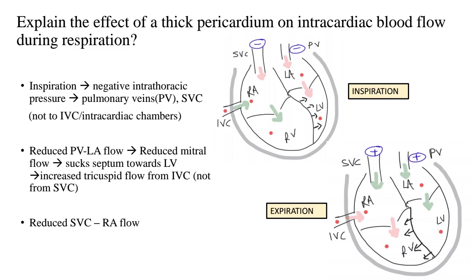Essentially, there is more negative pressure in the pulmonary veins and SVC and relatively positive pressures in the rest of the cardiac chambers and IVC. Assuming pressures in the chambers to be zero and in those two structures to be below zero — whenever there is blood flow, you expect flow from higher to lower pressure. In the case of pulmonary vein to left atrium, blood flow will not occur because there is a lower pressure in the pulmonary vein and a relatively higher pressure in the LA, which impedes blood flow. So on inspiration there is reduced pulmonary vein to LA flow.